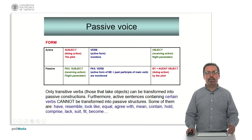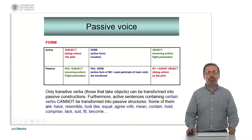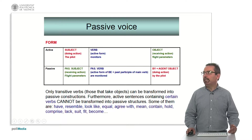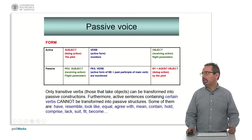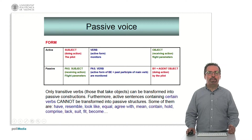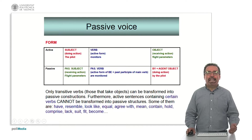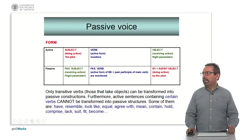The important thing is to know how to transform an active verb into a passive verb and vice versa. But we have to bear in mind that only transitive verbs — that means verbs that can take objects, that are followed by objects, which can be one or two objects — only transitive verbs can be transformed into passive constructions. Some sentences containing certain verbs, therefore, cannot be transformed into passive sentences.